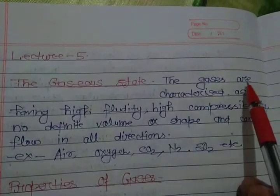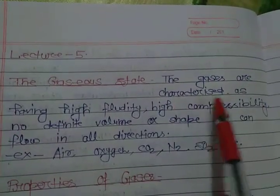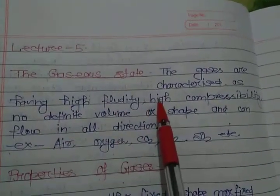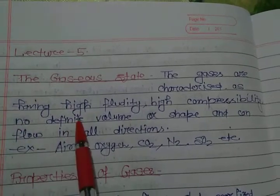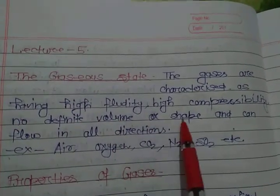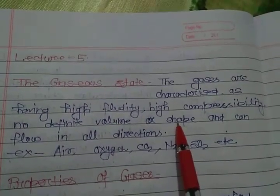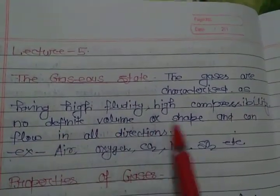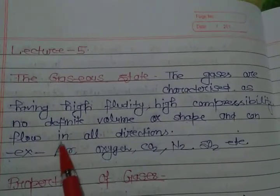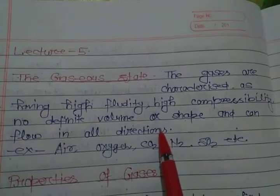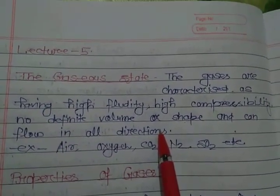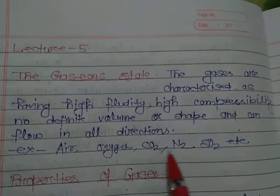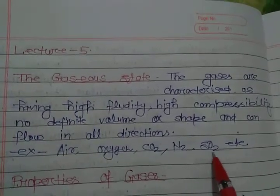The gases are characterized as having high fluidity, high compressibility, no definite volume or shape, and can flow in all directions. Examples are: air, oxygen, carbon dioxide, nitrogen, and sulphur dioxide, etc.